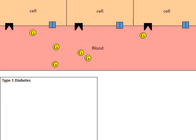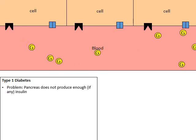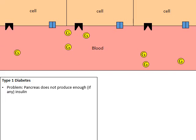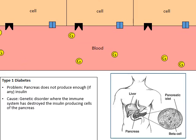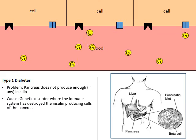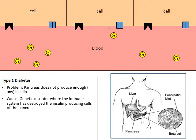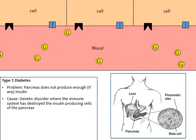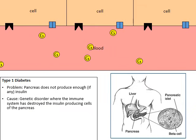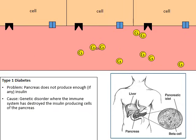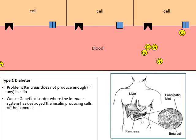Now let's look at type 1 diabetes. The problem type 1 diabetics face is that their pancreas does not produce enough insulin. We think the cause of this is an inheritable genetic disorder where the immune system has destroyed the insulin-producing cells found inside the pancreas — these are called beta cells. Once the beta cells have been destroyed and damaged, they're not able to produce insulin.